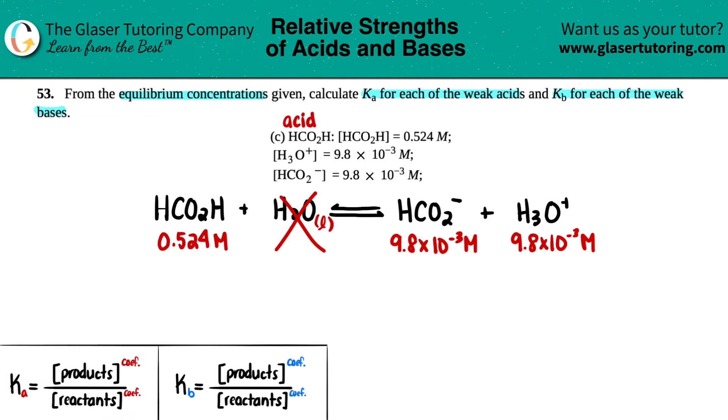So in this case, I have Ka equals products, which are these guys, divided by reactants. And remember, if you have two products, they're multiplied by each other in the formula. They are not additive. So I'm just going to add these brackets. So it's going to be HCO2- times H3O+, because those are your two products, divided by your one reactant, HCO2H.